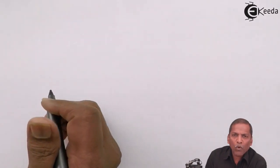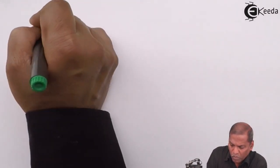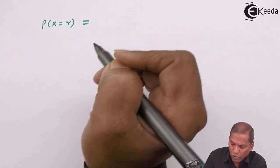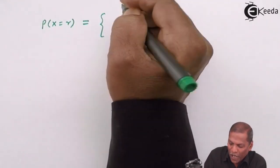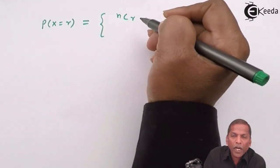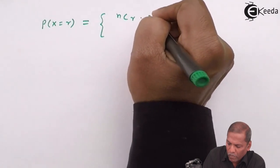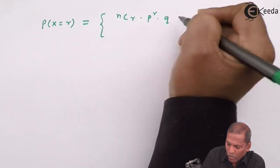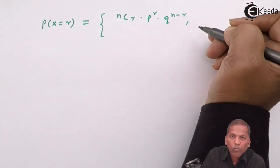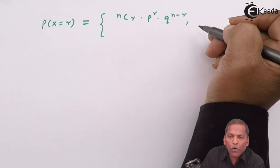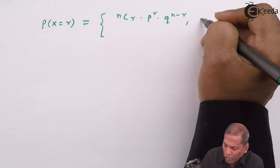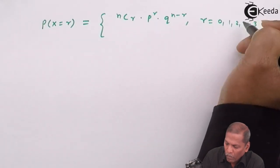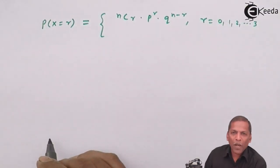probability X equal to r is equal to nCr into p raise r into q raise n minus r, r taking value from 0, 1, 2, 3 up to n, is equal to 0 otherwise.